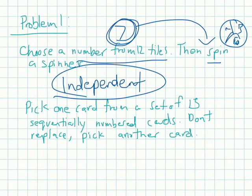Let's look at the next example. Pick one card from a set of 15 sequentially numbered cards, so sequentially just means the cards numbered 1, 2, 3, 4, 5, 6, 7, 8, all the way to 15. If I hold it in my hand, I don't replace it, and I pick another card. These are dependent events.